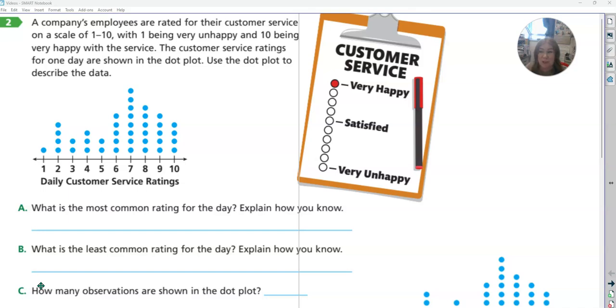For task 14.2, number two, it tells us that a company's employees are rated for their customer service on a scale of one to ten. One is unhappy, ten is very happy with the service. The customer service ratings for one day are shown in the plot. Use the dot plot to describe the data.